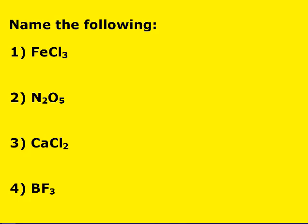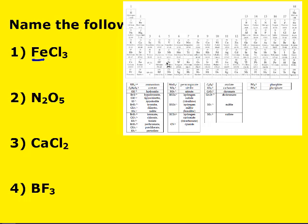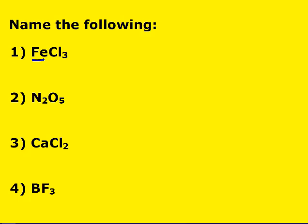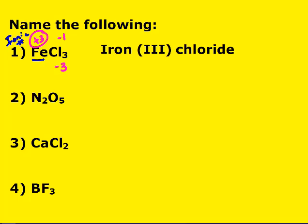Now we're naming compounds where some are ionic and some are molecular. Step one: look at the first element. Iron is a metal — if it's a metal, ask yourself: do I know iron's charge? Is it in group 1A, 2A, or a fixed-charge metal like silver, zinc, cadmium, aluminum, or gallium? Iron is not, so that means I need Roman numerals. This is ionic. Chlorine has a charge of −1; −1 times 3 is −3, so iron must be +3 — iron(III) chloride.